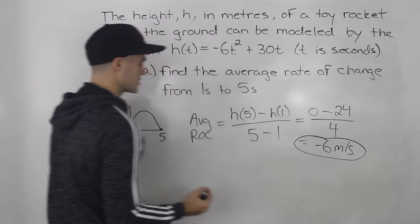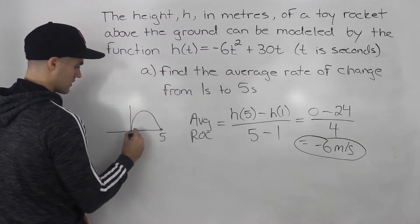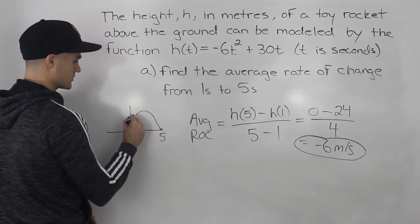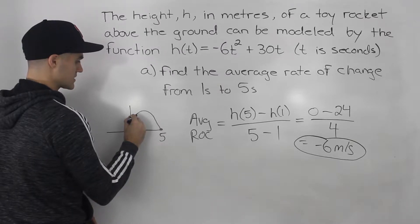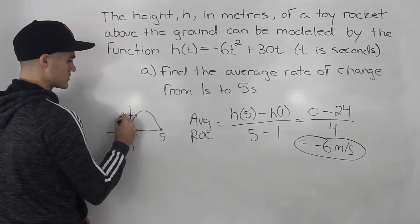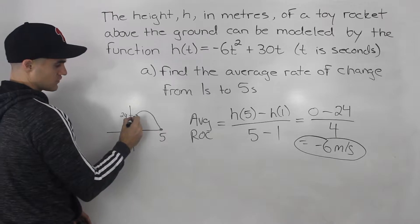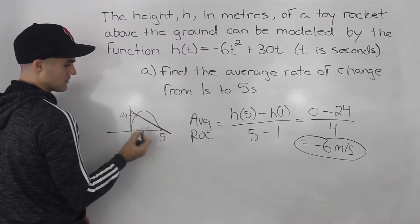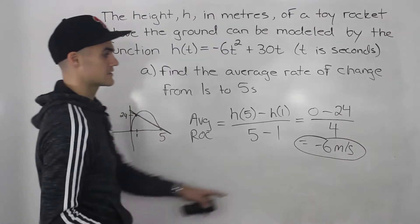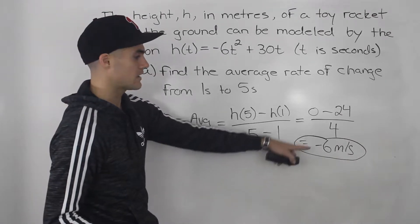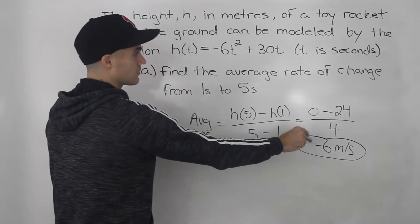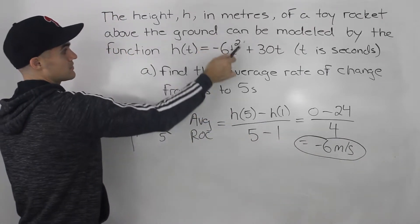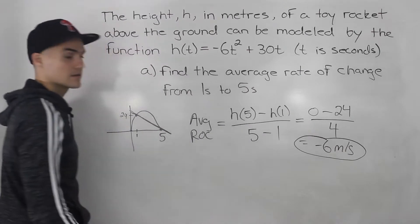So that's the average rate of change. At one second the rocket has a height of 24. The average rate of change from time one to time five — if we draw a secant line there — the slope of that secant line is going to be negative six. Don't forget your units: meters per second, because height is in meters and t is in seconds.